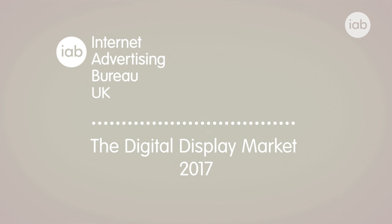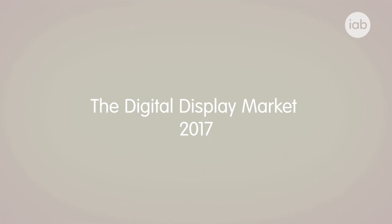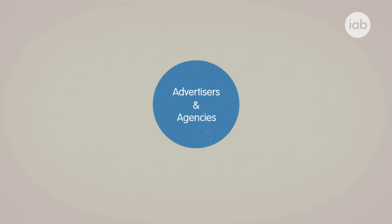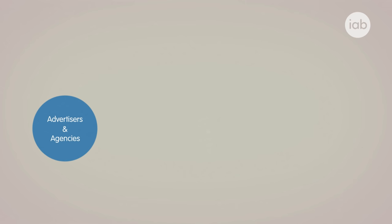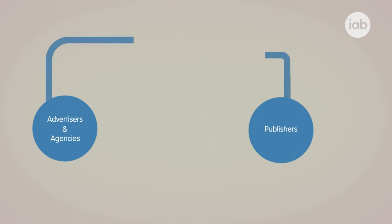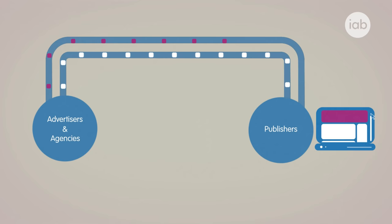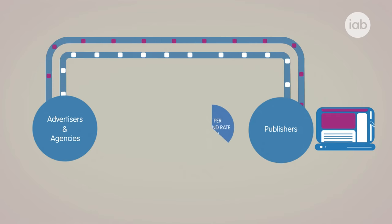This is a 2017 Guide to the Digital Display Market from the IAB. To understand how far we have come in the last 20 years of online display trading, we need to start from the beginning. An advertiser, or an agency representing an advertiser, would work directly with a publisher to purchase ad space on their website. This could be done on a tenancy basis, with every visitor to the website being shown the same message, or the advertiser could purchase a share of the total impressions paid for at a cost per thousand rate.